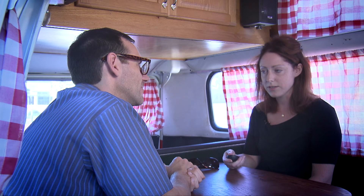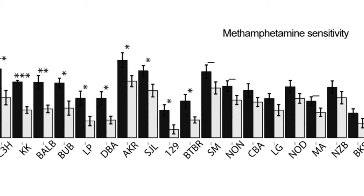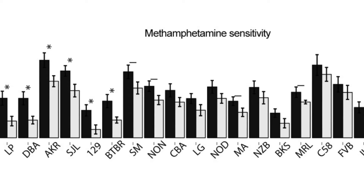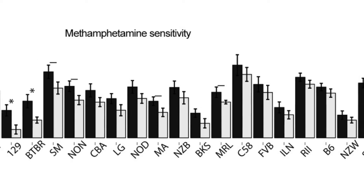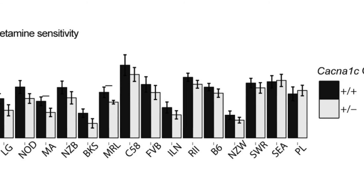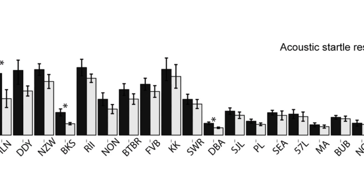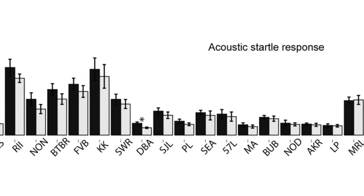Surprisingly, the majority of phenotypes we measured showed trending to very strong genotype-by-strain interactions. Aside from the statistical significance of these interactions, the data from different strains frequently supported very different conclusions. Often, there were very strong effects in some strains, while others showed complete resistance to the same effect of the null allele. In several cases, the same allele had opposite effects in different strains.